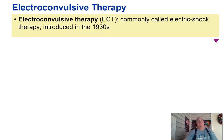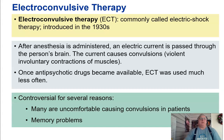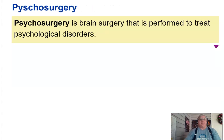Electroconvulsive therapy, commonly called electric shock therapy, was introduced in the 1930s. After anesthesia is administered, an electric current is passed through a person's brain, causing convulsions — violent, involuntary contractions of muscles. Once antipsychotic drugs became available, electroconvulsive therapy was used much less often. It is controversial because many are uncomfortable causing convulsions in patients, and it often creates memory problems. Carrie Fisher from Star Wars had problems with depression and found electroconvulsive therapy very useful.